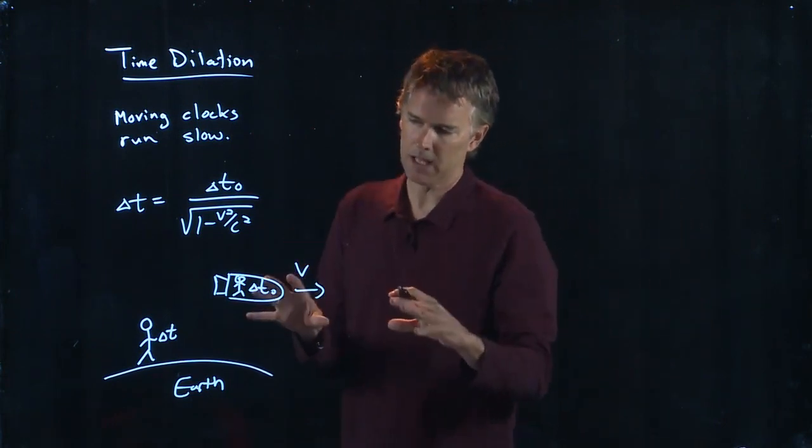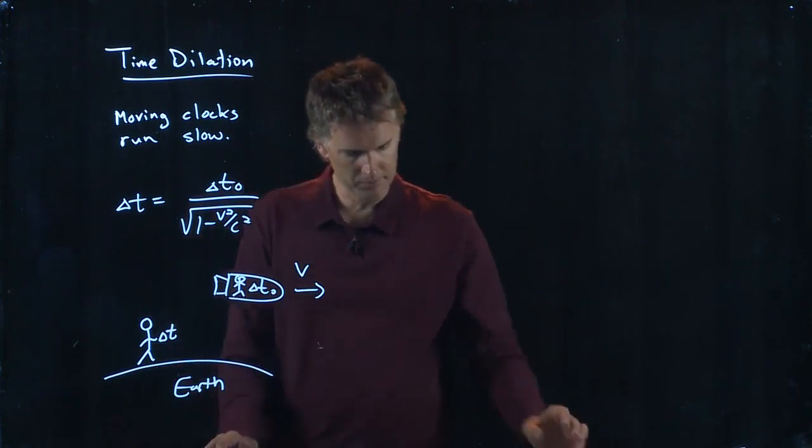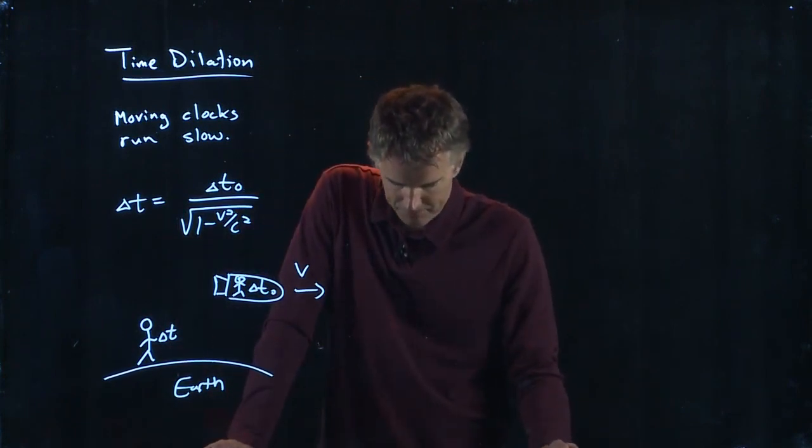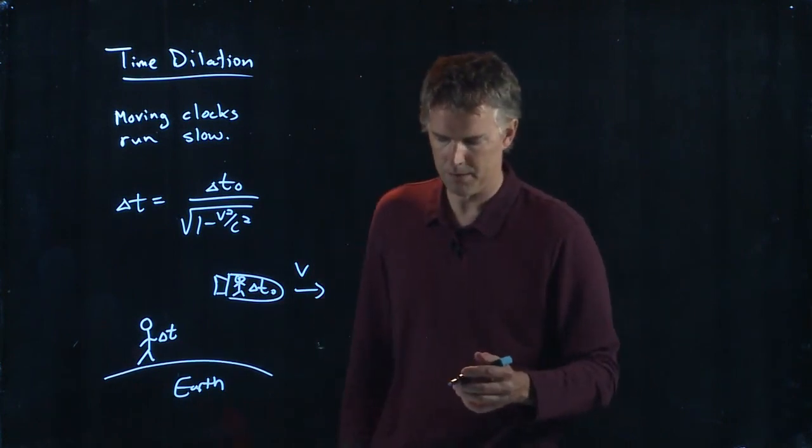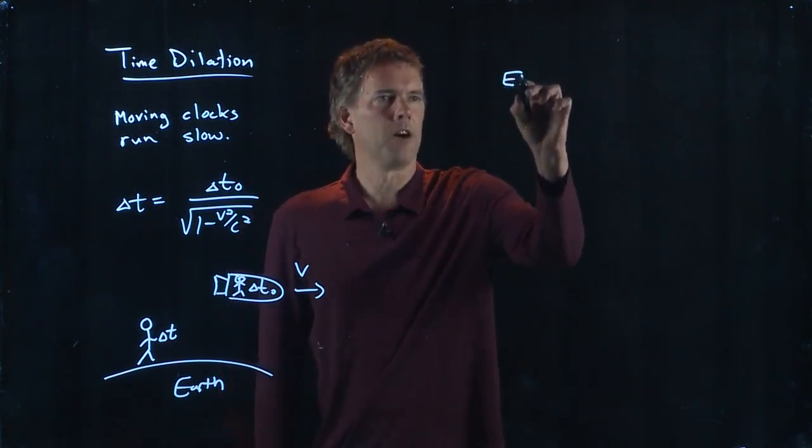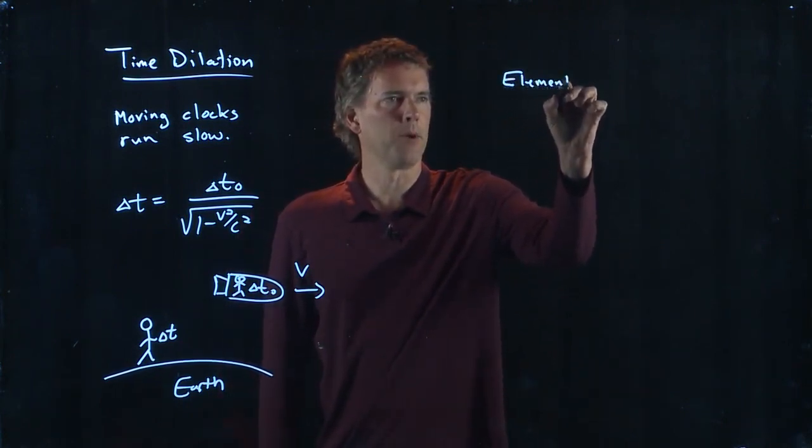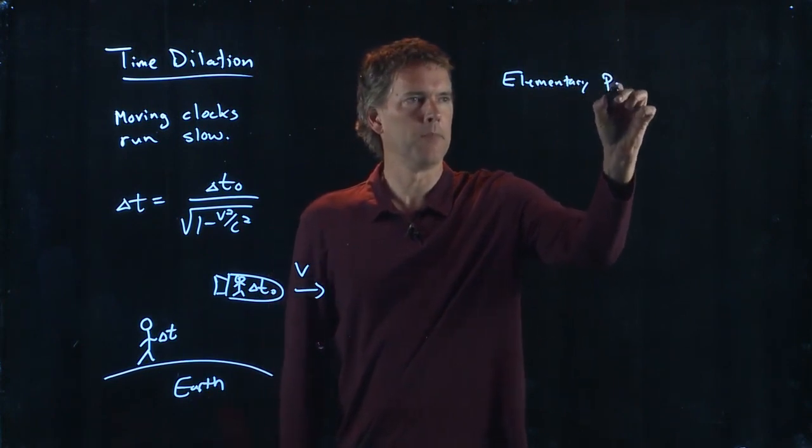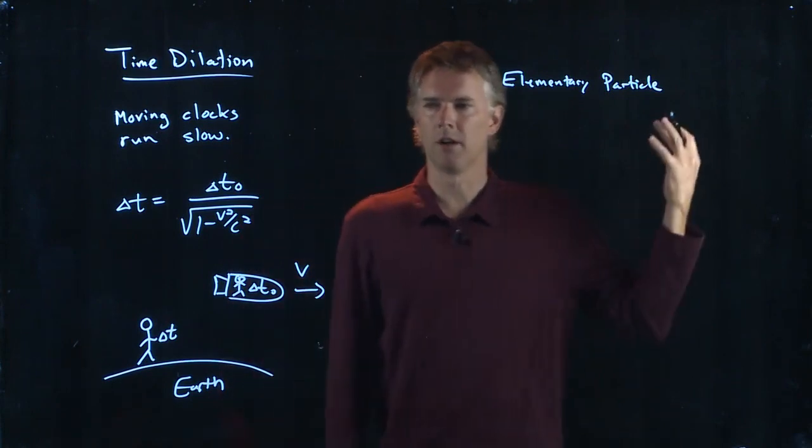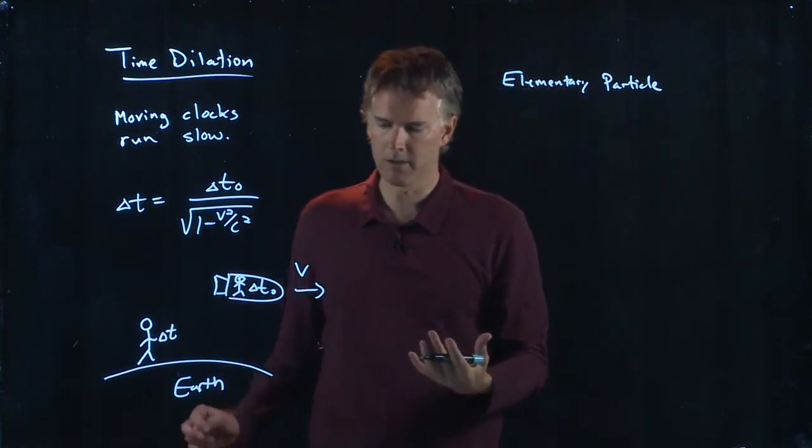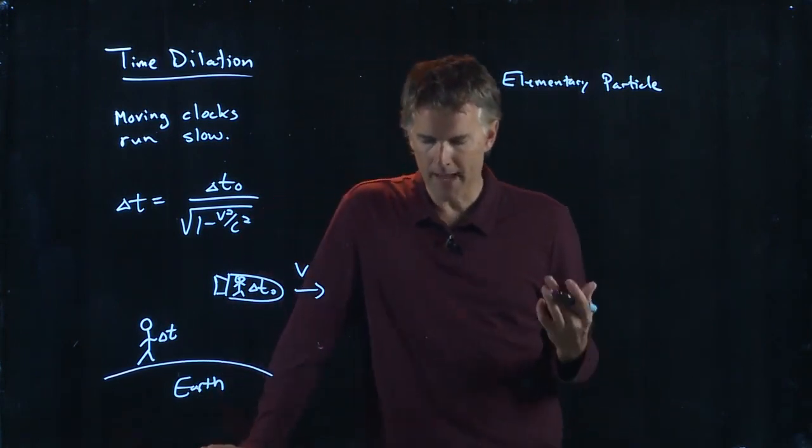So we talked about this in class. Let's take a look at one of your homework problems that deals with this. This is problem 26.02. We have an elementary particle, this might be like a muon. Muons are particles that are streaming through our atmosphere. They come from the Sun and they have a very short lifetime.